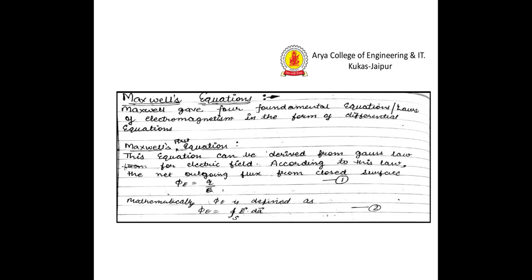This equation can be derived from Gauss's law for electric field. We already studied Gauss's law for electric field in class 12th. According to this law, the net outgoing flux from a closed surface phi_E is equal to Q upon epsilon, where epsilon is the permittivity of the medium. Mathematically, phi_E is defined as the surface integration of E dot dA. The circle on the integration sign shows it is for a closed surface.